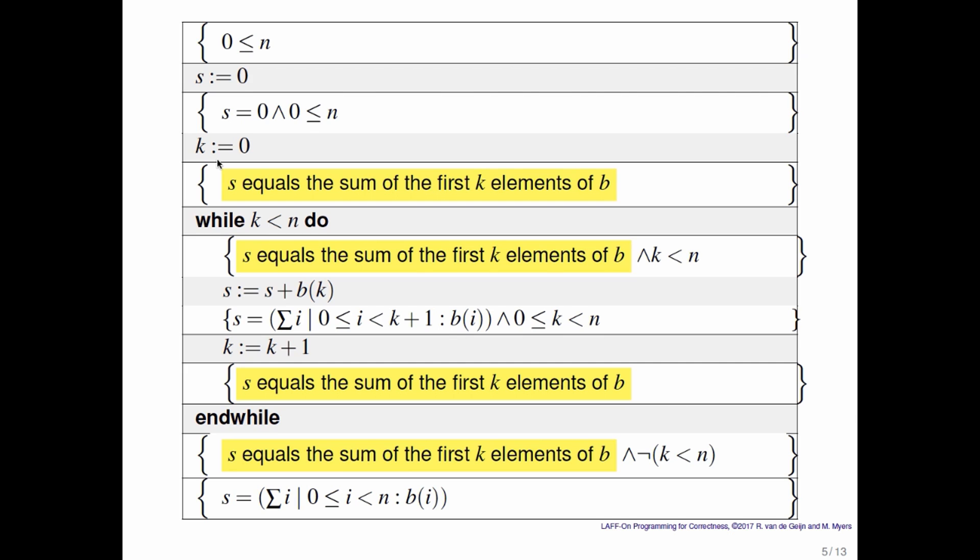Now how can we convince you of that? Well here we have annotated once again that same code segment. And notice that we have used English sentences to make things a little clearer. And what we reason here is that before the while loop starts, s contains the sum of the first k elements of b.